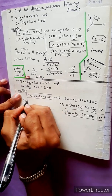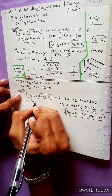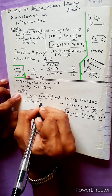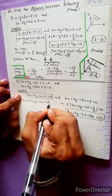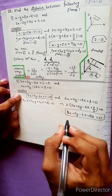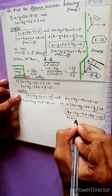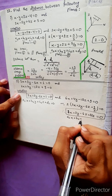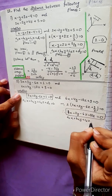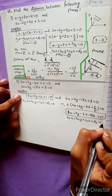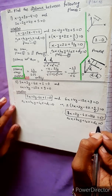We compare with the general form: a1x + b1y + c1z + d1 = 0 and a2x + b2y + c2z + d2 = 0.